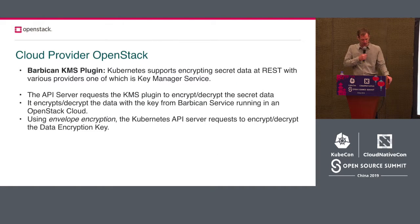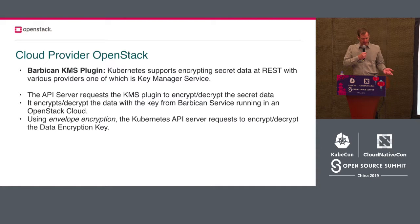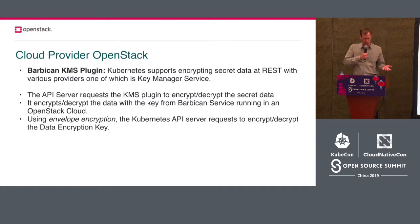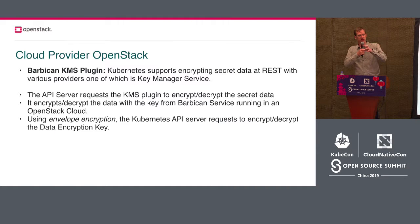We also have the Barbican KMS plugin. The API server requests the KMS plugin to encrypt the secret data. It encrypts the data with the key from the Barbican service running in an OpenStack cloud, and using envelope encryption, the Kubernetes API server requests Barbican to encrypt and decrypt the data encryption key. You're basically storing the secrets that allow Kubernetes to encrypt data stored in the cluster, secured in Barbican — OpenStack's secure key service.